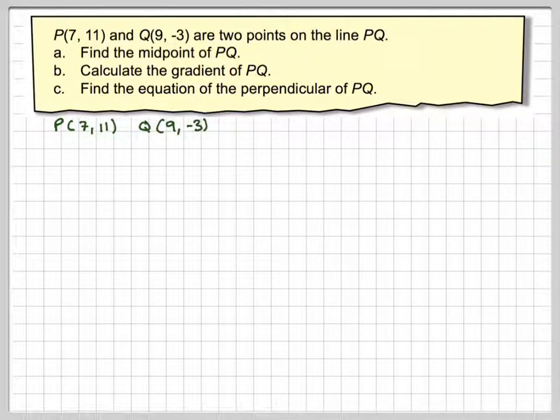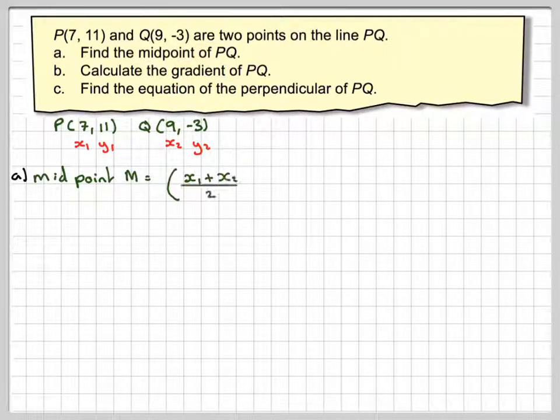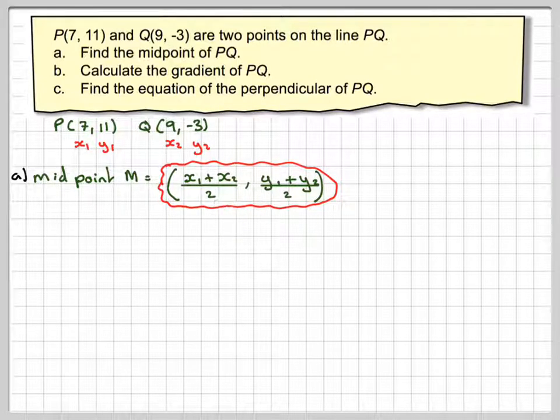So this is a good test of all your coordinate geometry. We've got the two points here. Always a good idea to mark down X1, Y1, X2, Y2. So for the midpoint, you just add the two X coordinates together, divided by 2 to get the X coordinate, and then the two Y coordinates together, divided by 2 to get the Y coordinate.